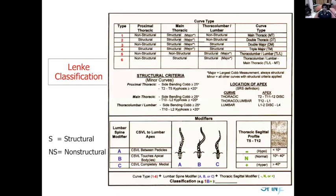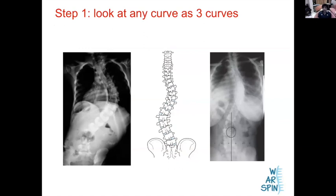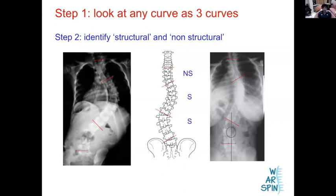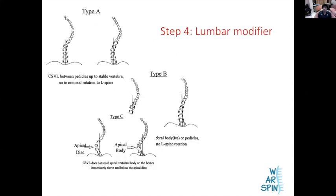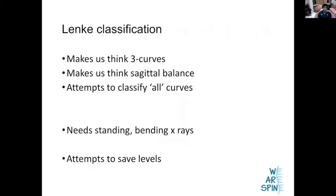The Lenke classification is much harder to remember — don't try to memorize it or you'll forget everything else. Just remember the principles it teaches: every curve is made up of three parts, so look above and below before deciding what kind of curve it is. Look at the sagittal profile of every spine, not just the AP view. And identify and subclassify your lumbar curve, because that tells you how low you need to go in surgery.